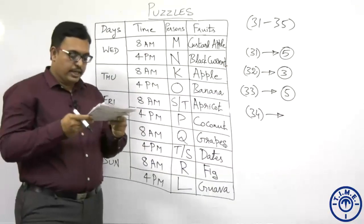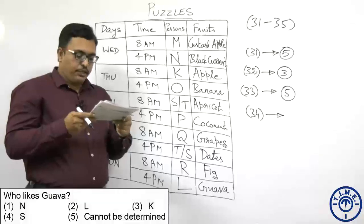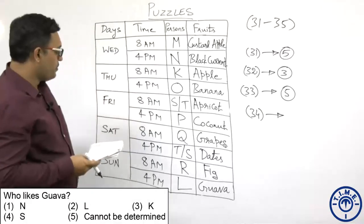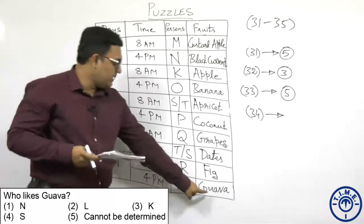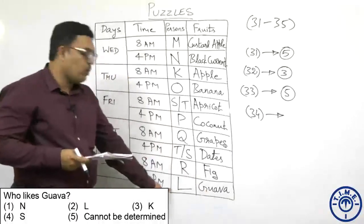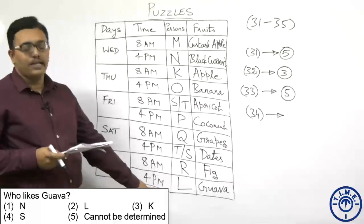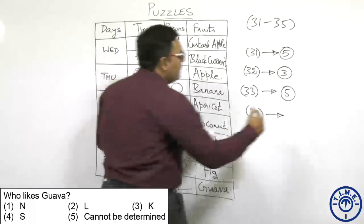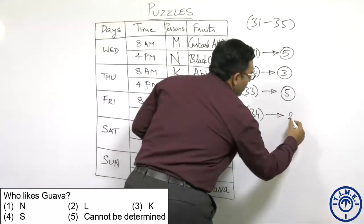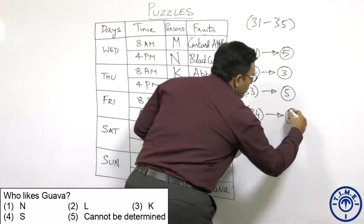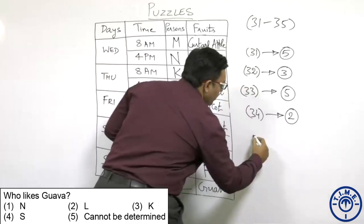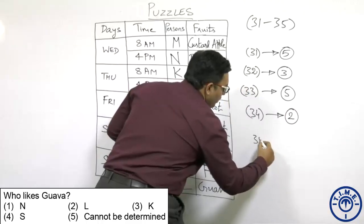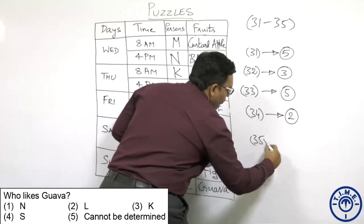Question 34: Who likes Guava? Guava is assigned to L, which is given in the second option. So the second option is the answer for question 34.